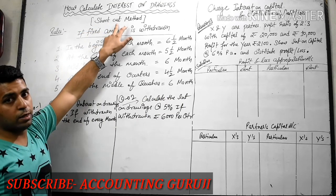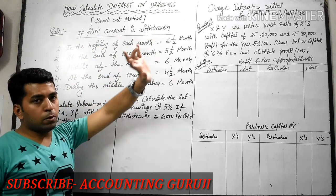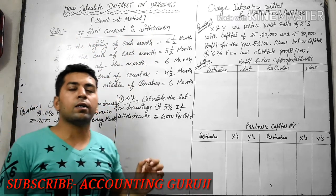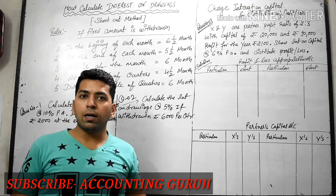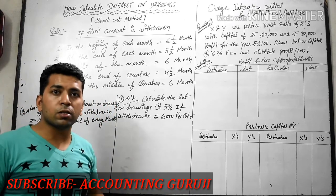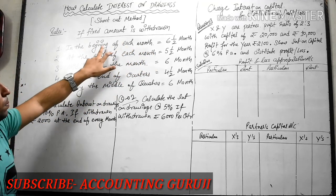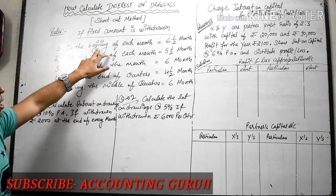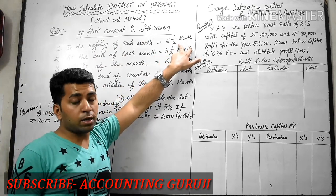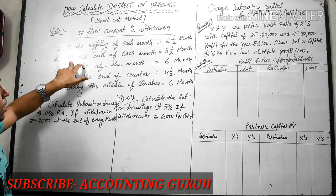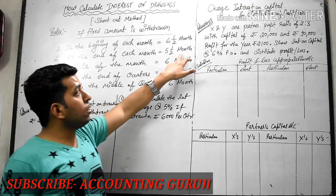First, this is a shortcut method. The rules are: if a fixed amount is withdrawn from the business for many months — quarterly or annually — and if the withdrawal is at the beginning of each month, then we use 6.5 months. If the withdrawal is at the end of each month, then we use 5.5 months. If it is at the end of the year, then interest is for 0 months (or one period only giving 5 months).